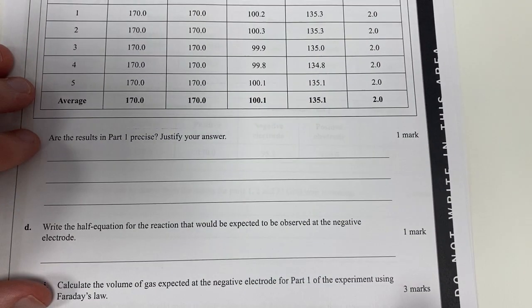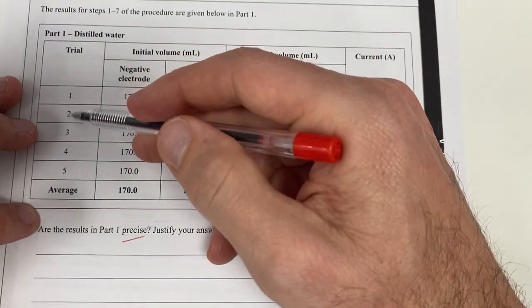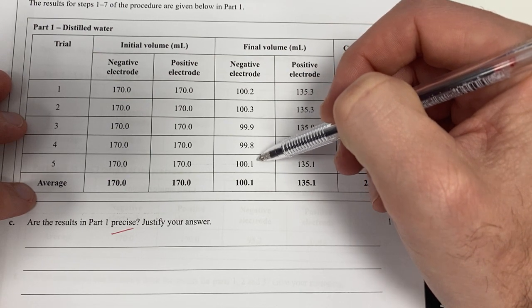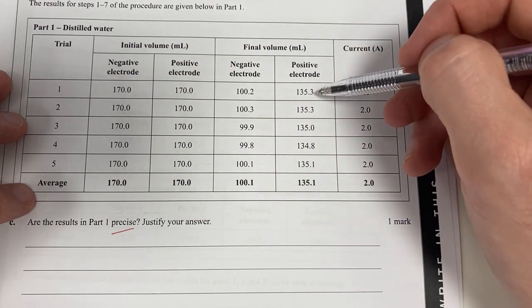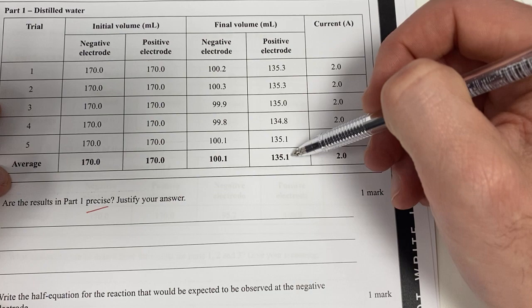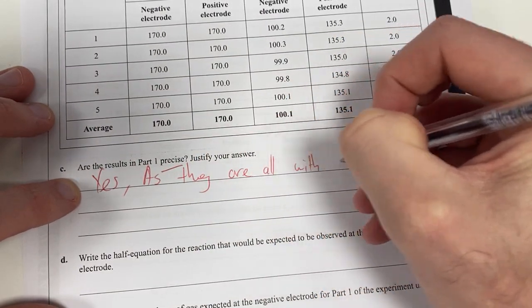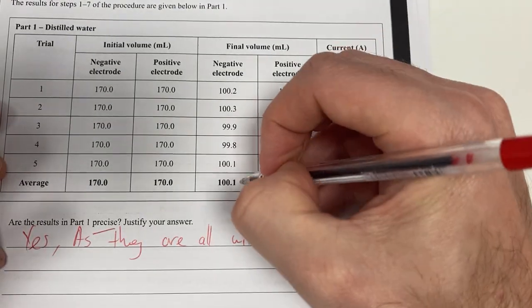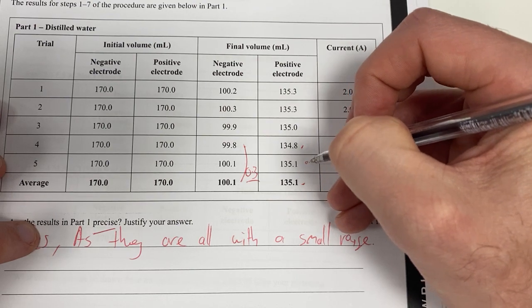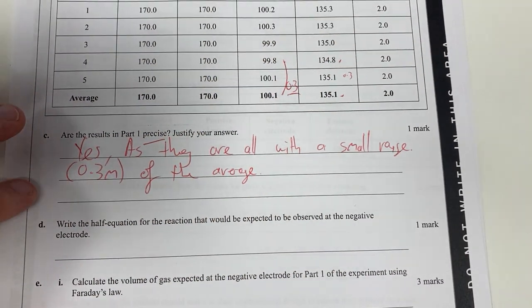Are the results in part one precise? Precision means they are relatively close together. So let's have a look. We're starting off with the same amounts here. These are all our different trials. These are all within 0.5 of the average. These ones within 0.43 of my average. These ones over here all within 0.3 of my average. So yes, they are precise as they are all within a small range. This is the biggest difference, 0.3. So all within a small range of 0.3 mL of the average. There's no outliers.